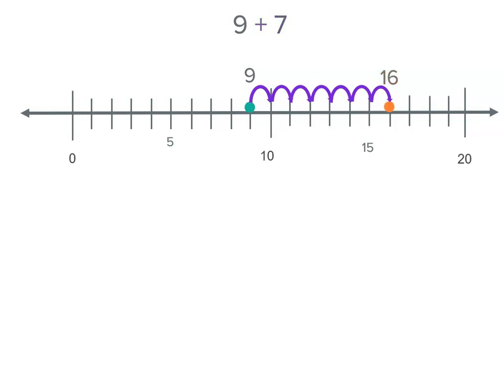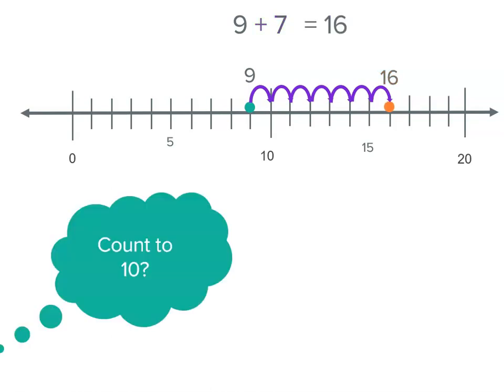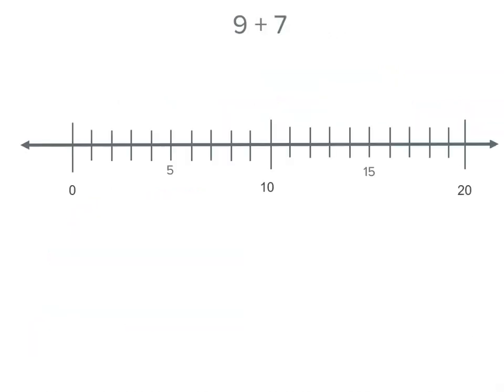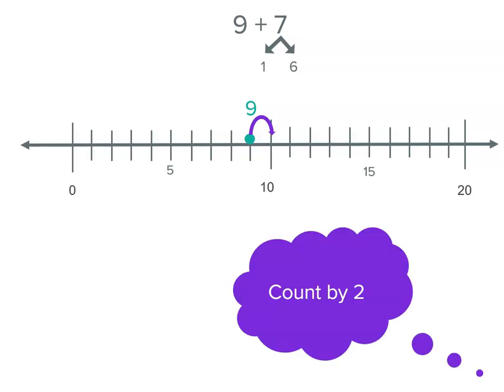Nine plus seven equals sixteen. We could also count to ten first — let's try that way with the same problem. This time we count from nine to ten, because we know nine plus one equals ten, which means we still have six left to add. Now we're going to do something different — we're not going to count by one. Six is an even number, so we can count by two, which saves some time.